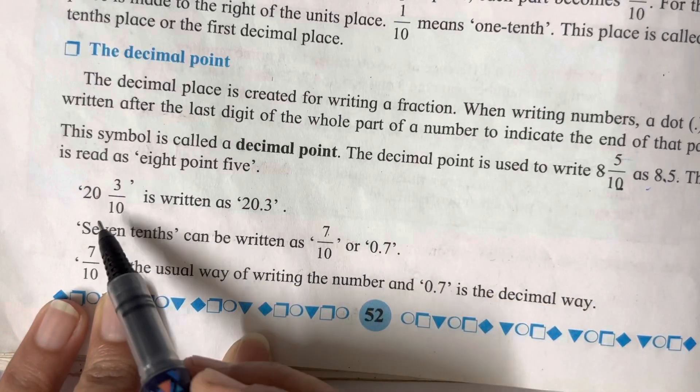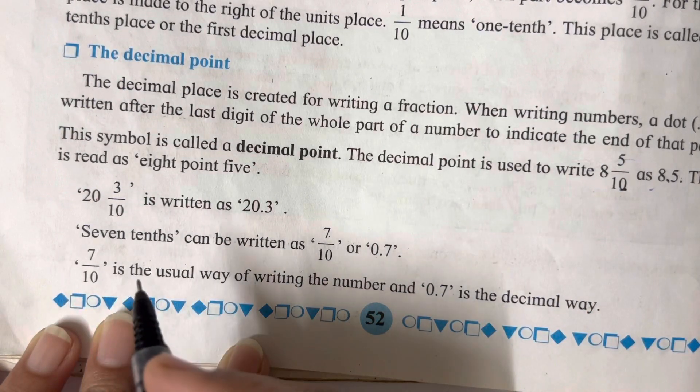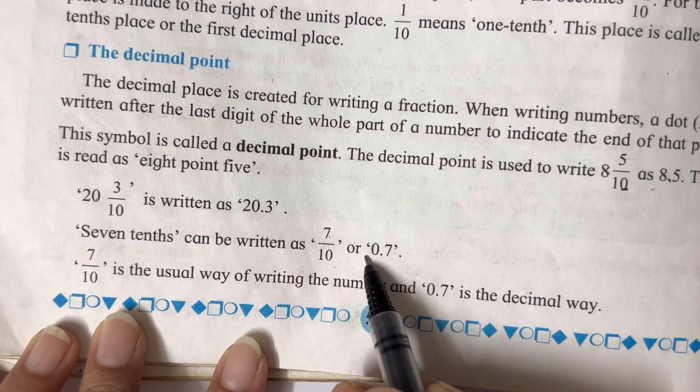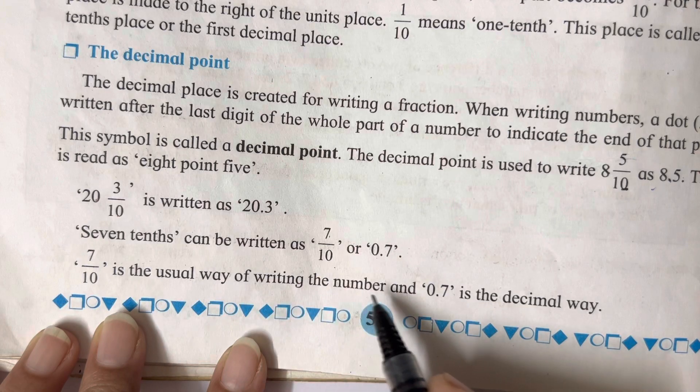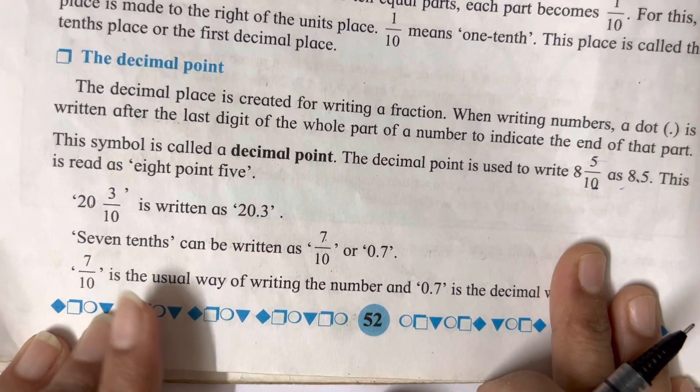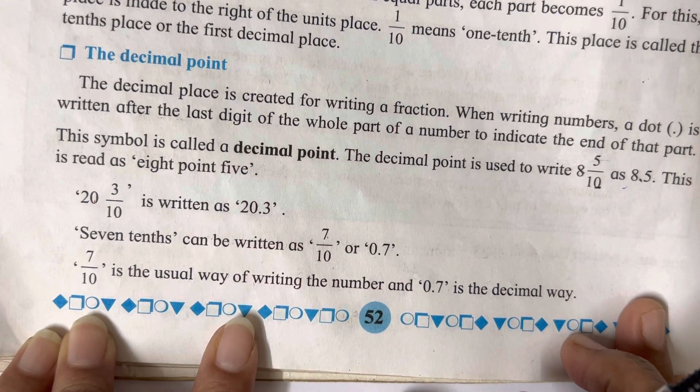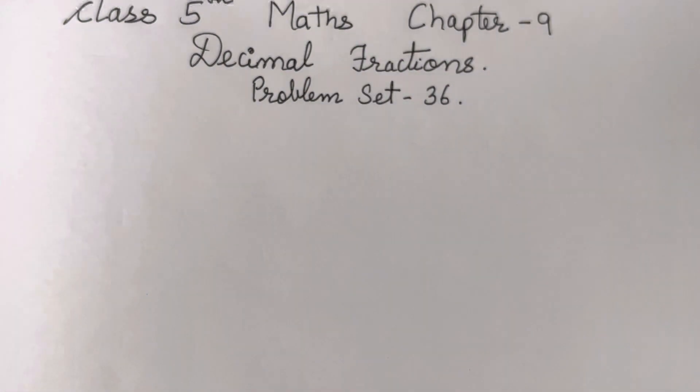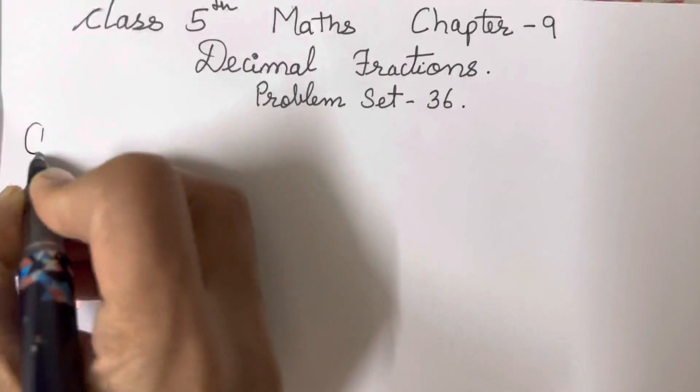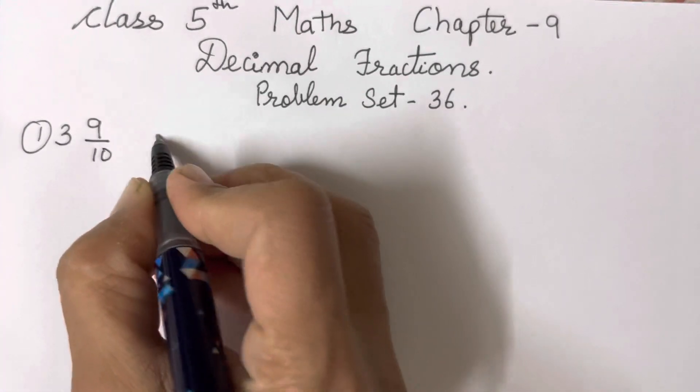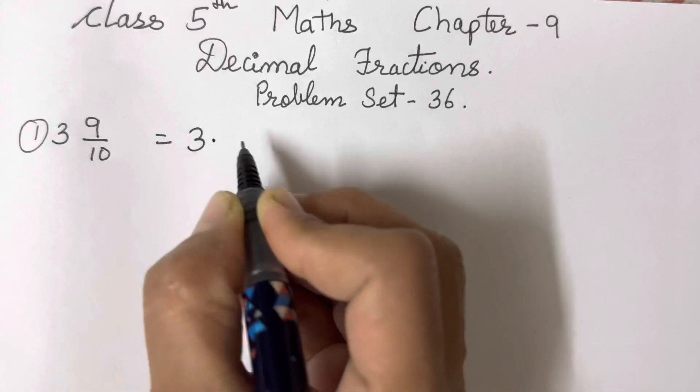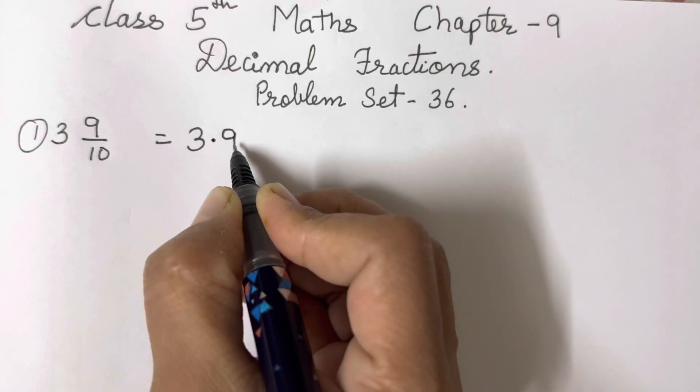So few examples have been given and how it is been read, because reading also we have to do. So 7 tens can be written as 7 upon 10 or 0.7. 7 upon 10 is usually written in the decimal way as 0.7. Reading is very important because the way you're going to read it, the same way you have to write it also.